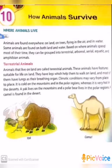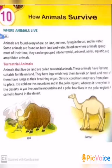The climatic conditions may vary from place to place. It is very cold in mountains and polar regions, whereas it is very hot in the desert. A yak lives on the mountains and a polar bear lives in the polar regions. A camel is found in the desert only.